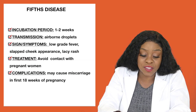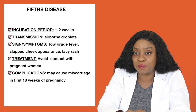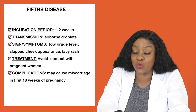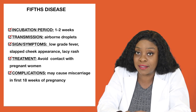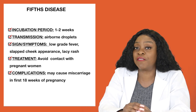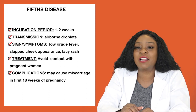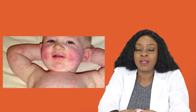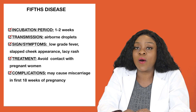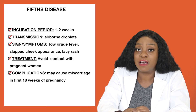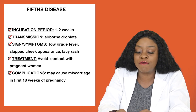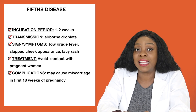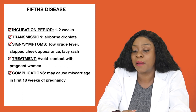Our last common pediatric communicable disease is fifth disease, or erythema infectiosum. It has an incubation period of one to two weeks and is spread by airborne droplets. Signs and symptoms include a low-grade fever, and fifth disease is notable because the child looks like someone slapped them across the face — the child's cheek will have that reddish slapped appearance, or they'll also have what we describe as a lacy rash. Fifth disease is another condition where we avoid contact with pregnant women, as it can cause miscarriage within the first 18 weeks of pregnancy.